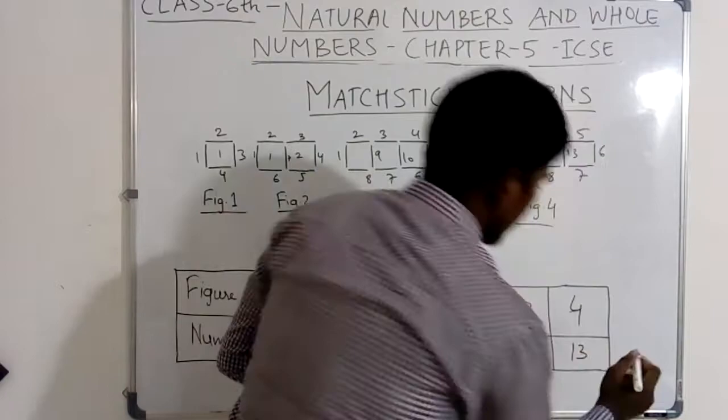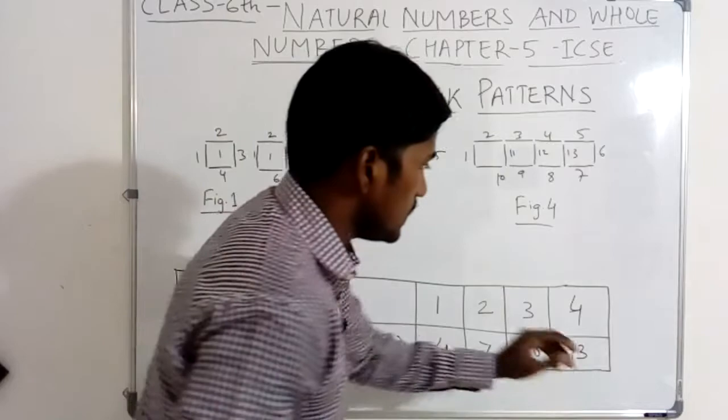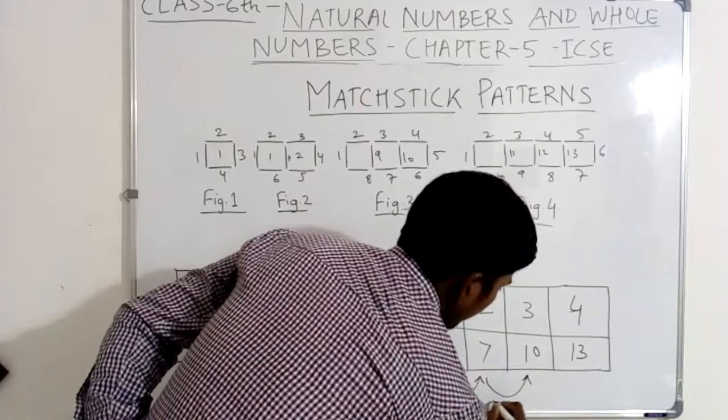So see here: in figure number 1, four mastic used. In figure number 2, seven mastic — four plus three equals seven. Seven plus three equals ten. Ten plus three equals thirteen. See how it increases by plus three each time.